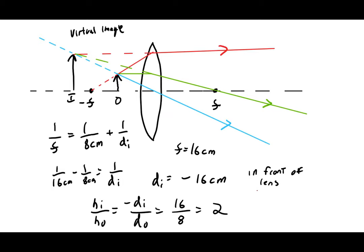Using the thin lens equation with object distance 8 cm and focal length 16 cm gives an image distance of negative 16 centimeters. A negative image distance means the image is in front of the lens — virtual. The magnification equation gives positive two, meaning the image is upright and twice the size of the object.